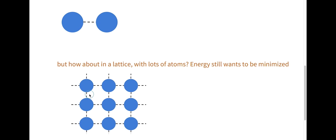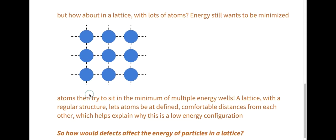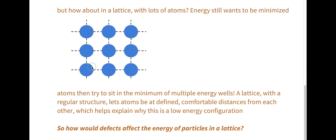But how about in a lattice where there are a lot of atoms? Energy still does want to be minimized. So these atoms try to minimize energies by sitting in multiple energy wells with their neighbors. Also, it's good to remember that an atom will be interacting with this one, and this one, and this one, and just all the atoms around it. Although the effects will probably become smaller as the distance between atoms increases.